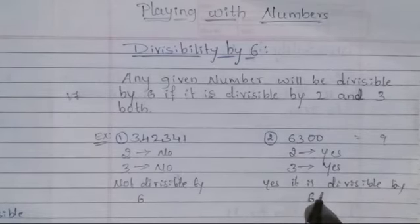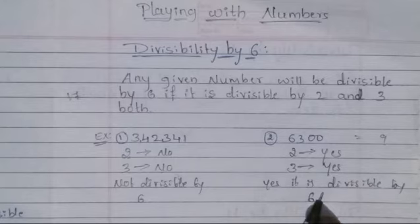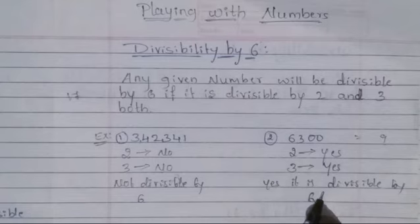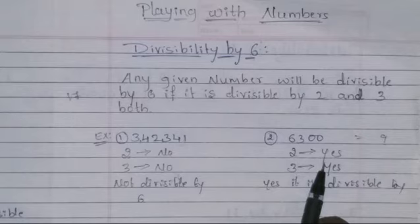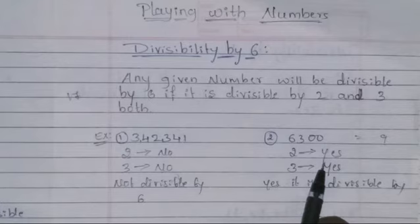To check the divisibility of two, you need to check the last digit of the given number. If the last digit is zero or any even number, then the whole number is divisible by two. To check the divisibility of three, we need to add all the digits of the number. If the sum of the digits is a multiple of three, then the whole number is divisible by three.